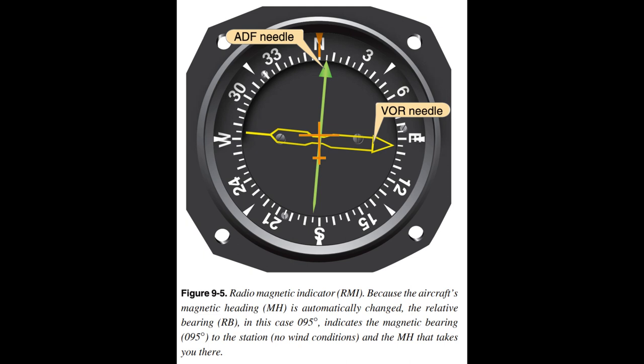Station Passage. When you are near the station, slight deviations from the desired track result in large deflections of the needle. It is important to establish the correct drift correction angle as soon as possible. Make small heading corrections, not over 5 degrees, as soon as the needle shows a deviation from course, until it begins to rotate steadily toward a wingtip position or shows erratic left/right oscillations. You are abeam the station when the needle points 90 degrees off your track. Hold your last corrected heading constant and time station passage when the needle shows either wingtip position or settles at or near the 180-degree position. The time interval from first indications of station proximity to positive station passage varies with altitude — a few seconds at low levels to 3 minutes at high altitude.